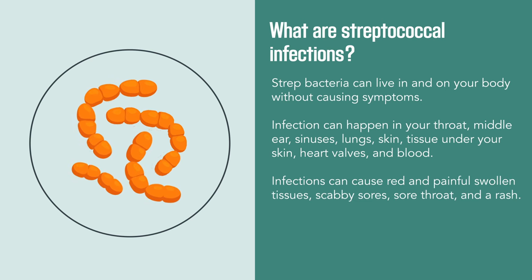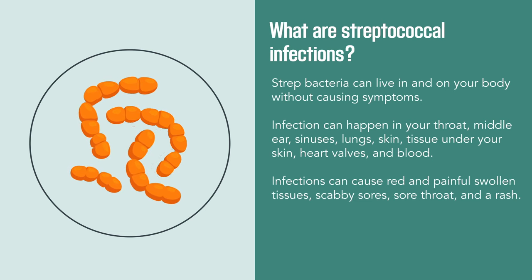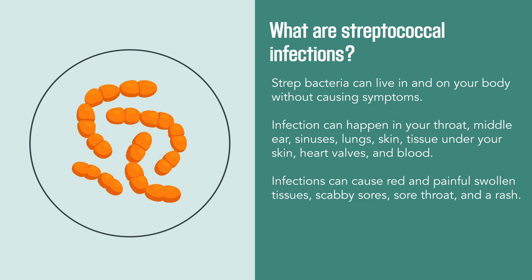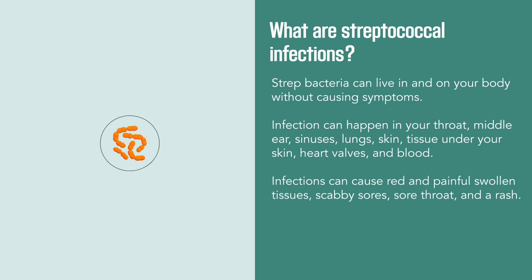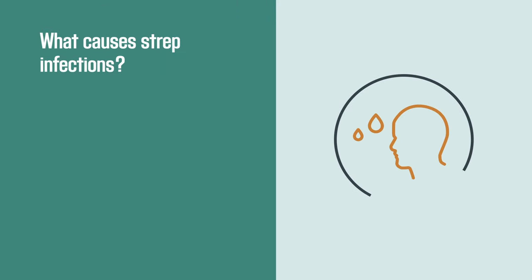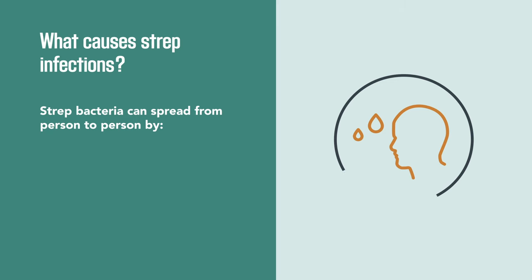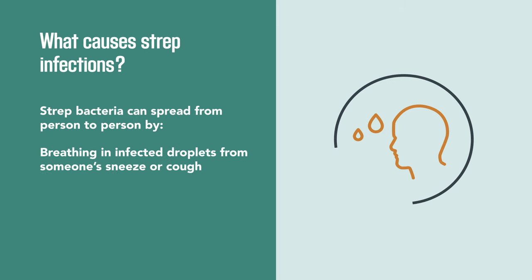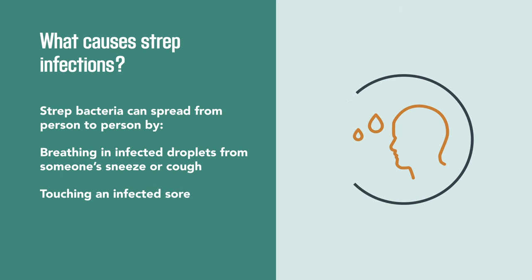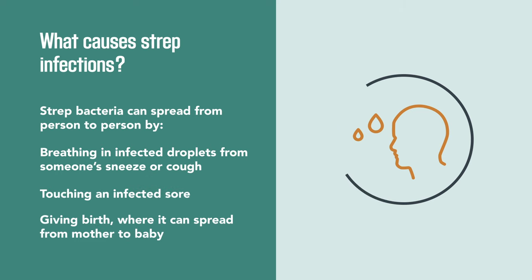Infections can cause red and painful swollen tissues, scabby sores, sore throat, and a rash. What causes strep infections? Strep bacteria can be spread from person to person by breathing in infected droplets from someone's sneeze or cough, touching an infected sore, or giving birth, where it can spread from mother to baby.